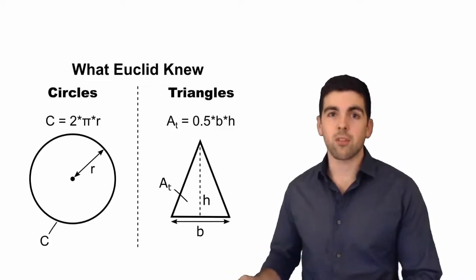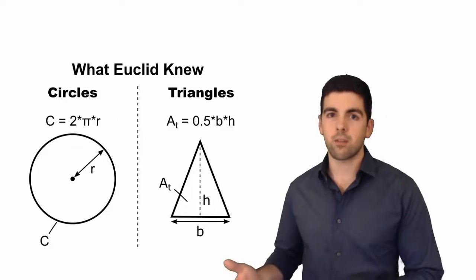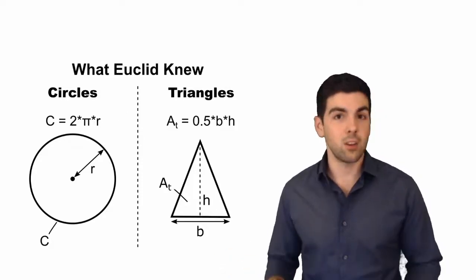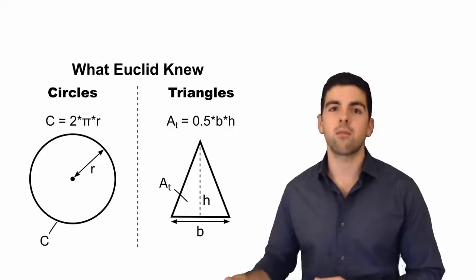What Euclid did to determine the area of a circle was he took what he knew. What he knew was that the circumference is equal to 2 times pi times the radius of a circle for any circle. He didn't know what pi was but he knew it was a constant value.